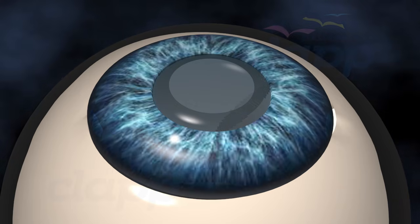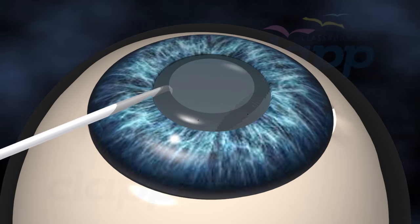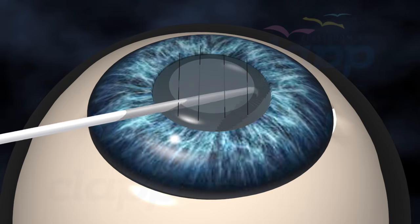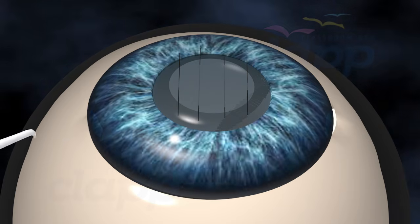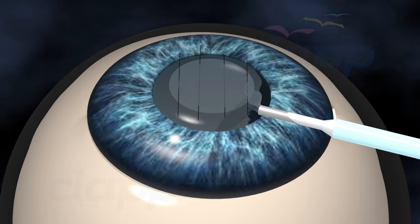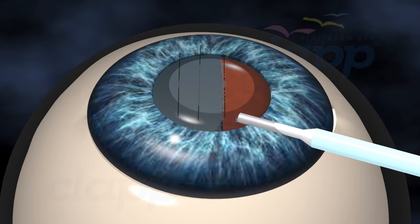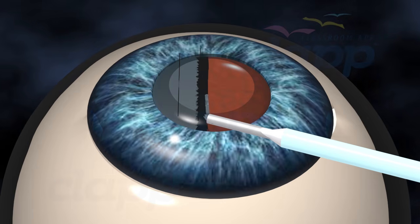Then the surgeon will break up the cloudy lens and carefully remove it. Cataract surgery employs advanced techniques such as phacoemulsification. This method uses ultrasonic energy to break up the cloudy lens, making its removal safer and more efficient.